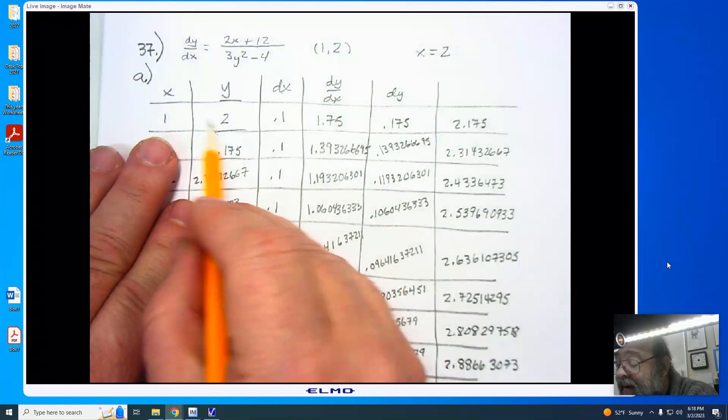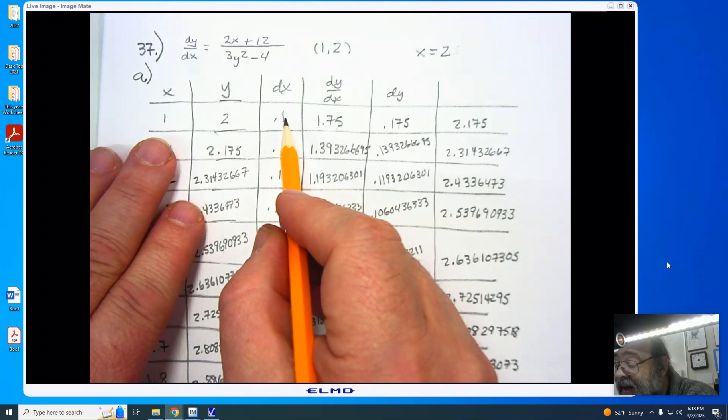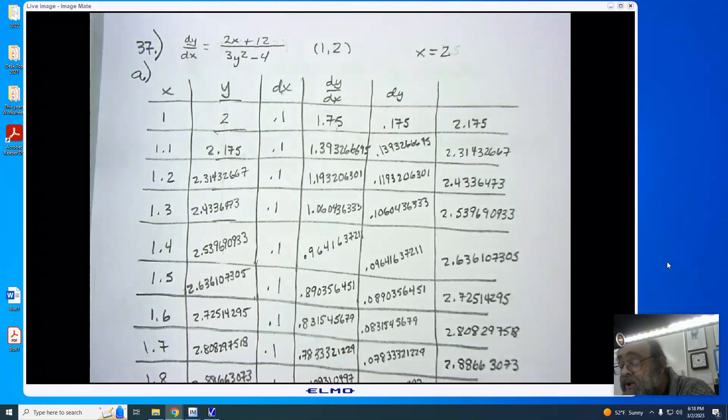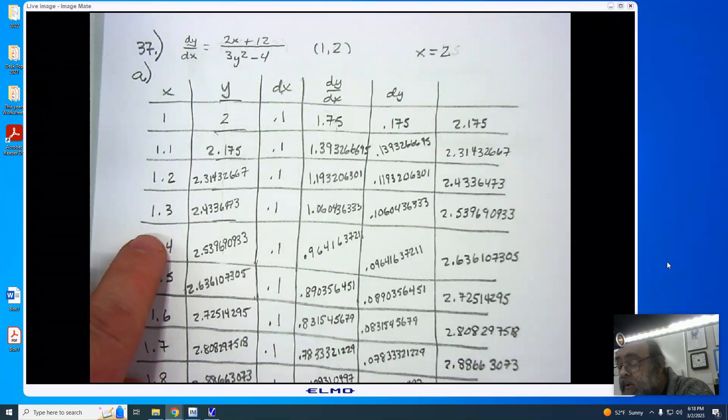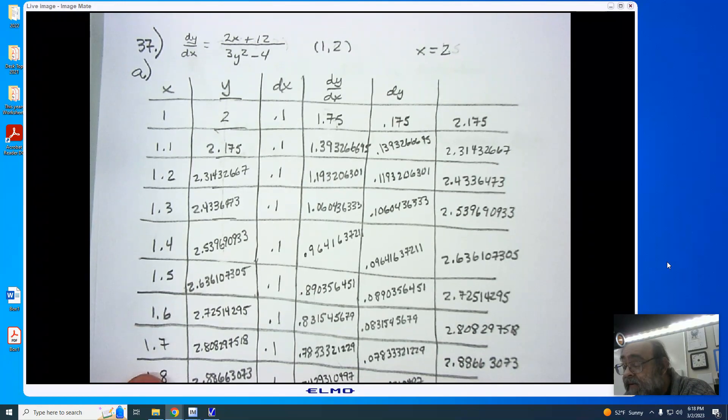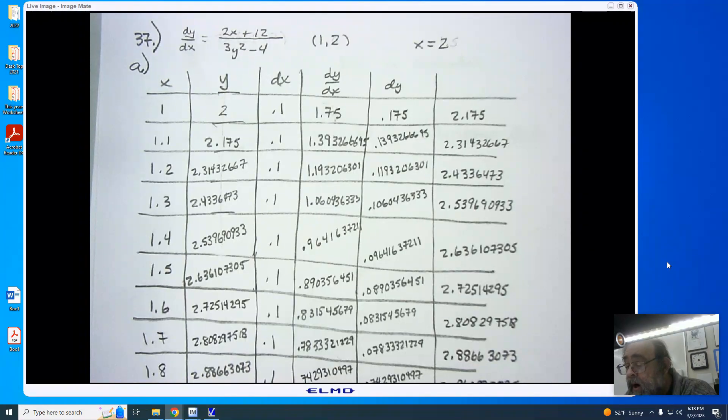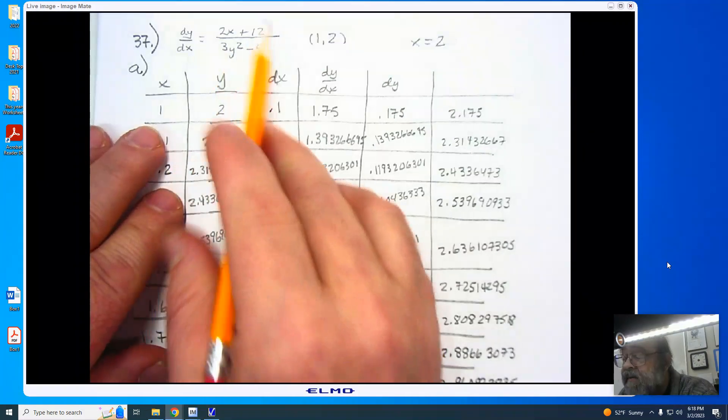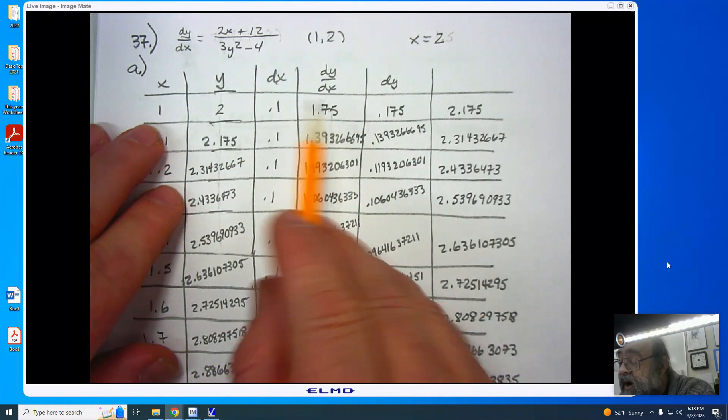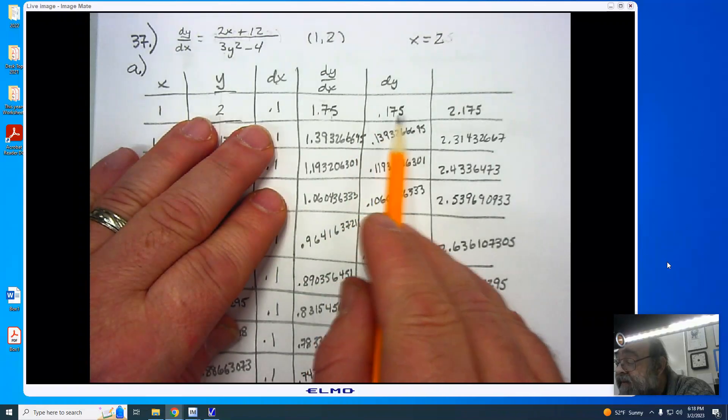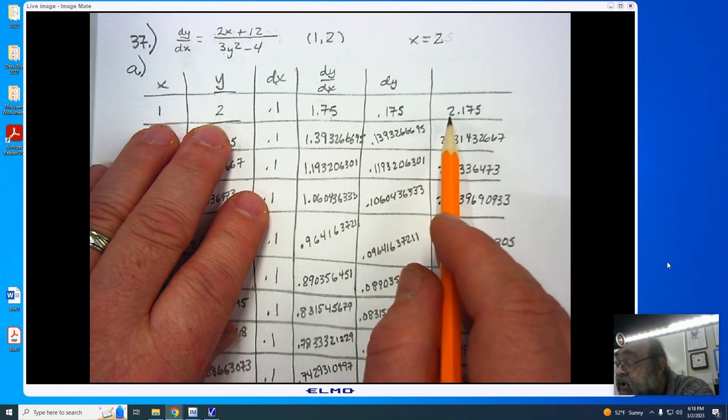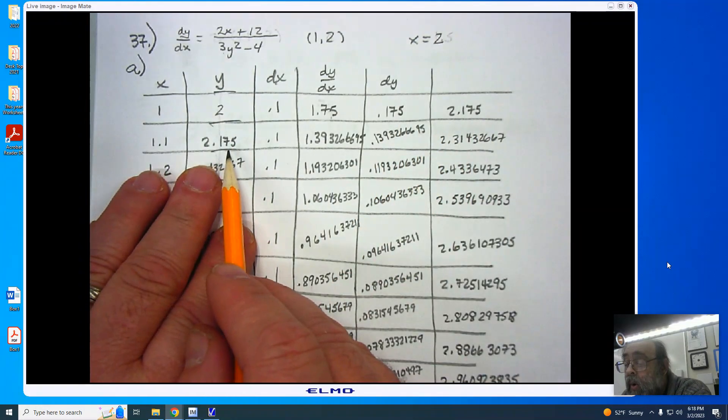We're starting with a 1 and a 2. We know that our dx is 0.1, which I have put all the way down, so that I filled in this portion of my chart: 1, 1.1, 1.2, 1.3, 1.4, 1.5, 1.6, 1.7, 1.8, 1.9, and 2.0. I'm now putting this into my formula, and I end up getting 1.75, which I multiplied by 0.1 to get 0.175. I added the 2 plus 0.175, and I got 2.175, which I now put under y.